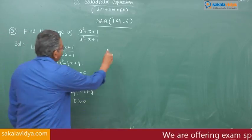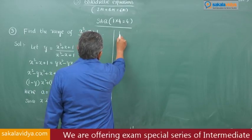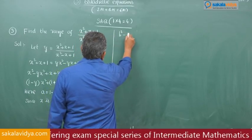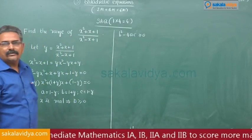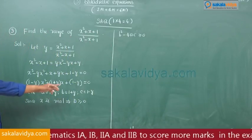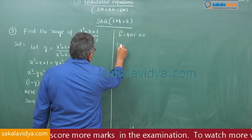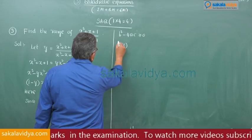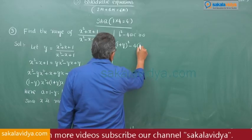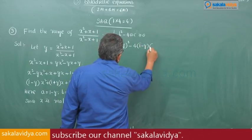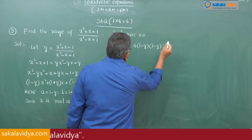So b² - 4ac ≥ 0. Substituting: (1 + y)² - 4(1 - y)(1 - y) ≥ 0.